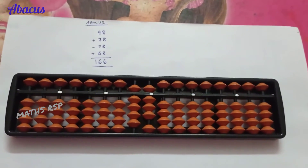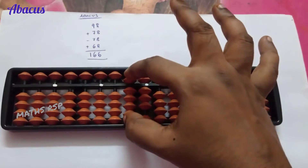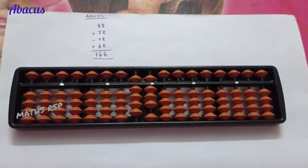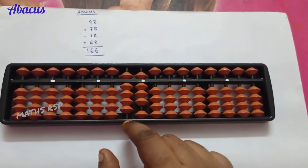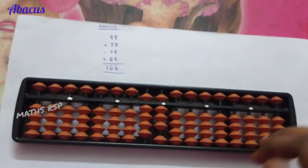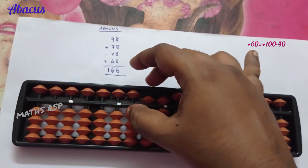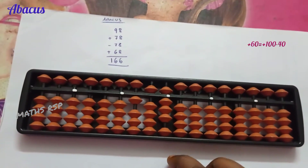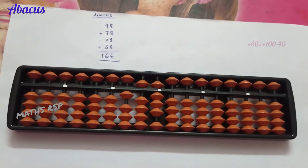Next, the last row is plus 68 — in the ten's strot we need to add six beads, but all beads are already added so we cannot add six directly. Apply the big friend formula: six's big friend is four, so plus 6 equals plus 10 minus 4. We remove four beads from the ten's strot and add one bead in the hundred's strot — plus 100 minus 40 equals plus 60. Six in the ten's strot means plus 60 is completed.